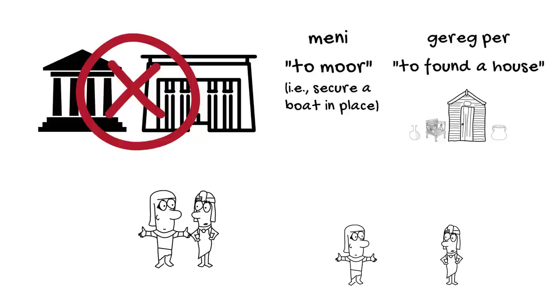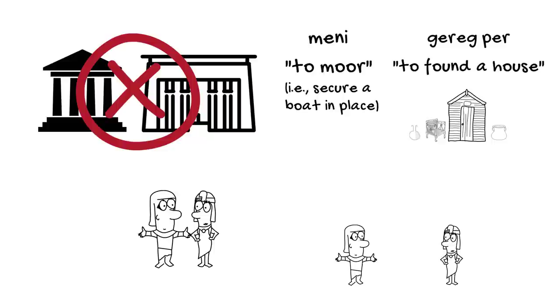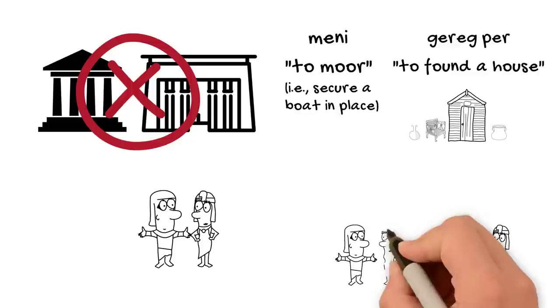While divorce was certainly not an ideal situation for a couple, it was not uncommon in ancient Egypt and it was certainly not considered a disgrace. We have records of lots of men and women who actually remarried after getting divorced.